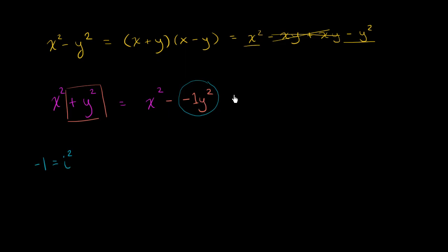So this is going to be equal to x squared minus, instead of negative 1, I'll write that as i squared, minus i squared y squared. And now this is interesting. I think you see where this is going, but I'll just make it very explicit. This is now x squared minus i y squared.